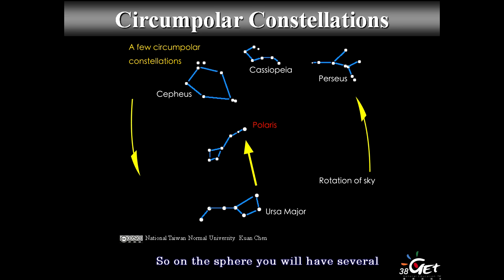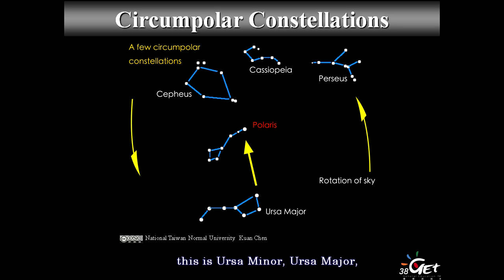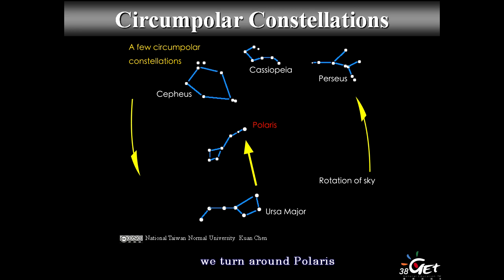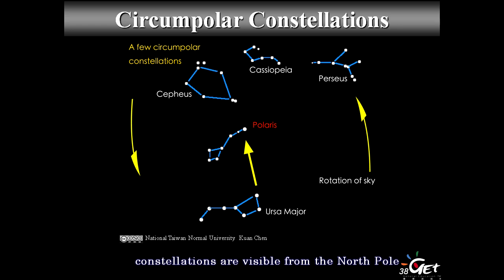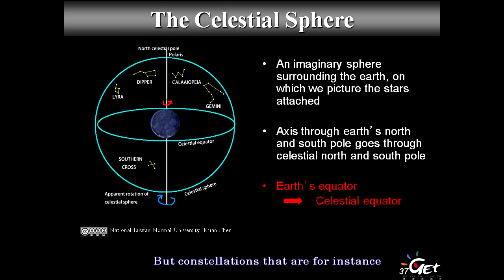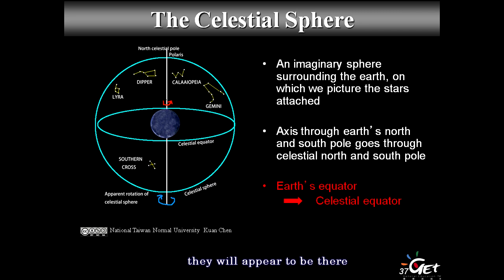Those circumpolar constellations are very close to Polaris and are visible in the north throughout the year — you can always see them. But constellations lower on the pole will appear in winter but not summer, for instance.